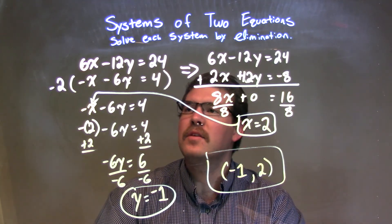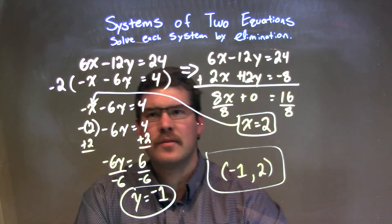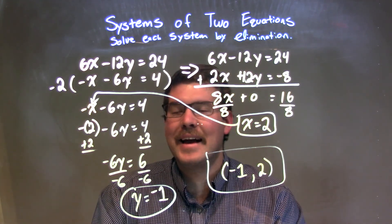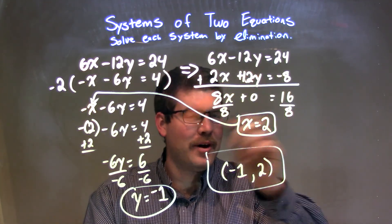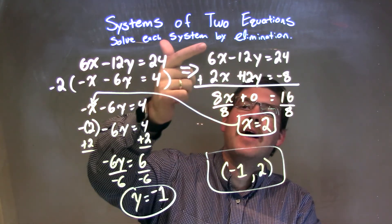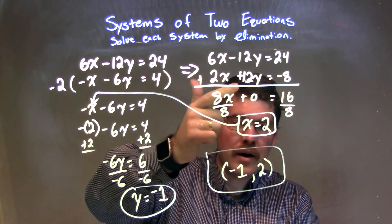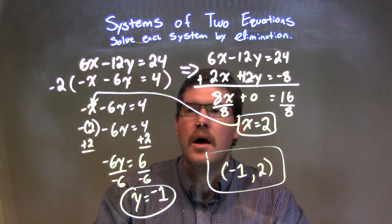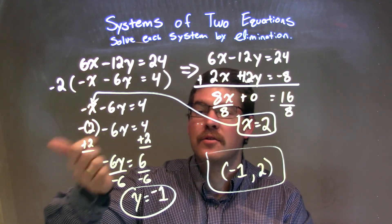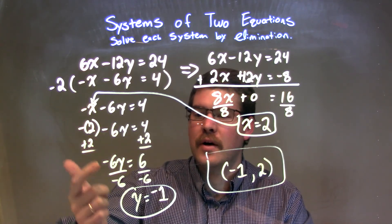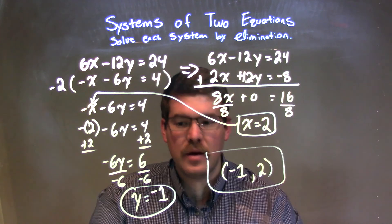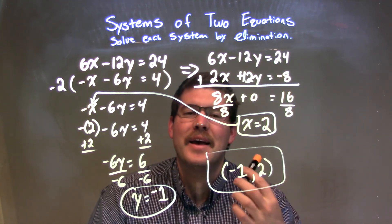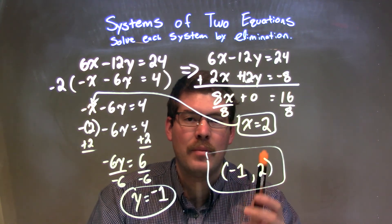Let's recap. We're given 6x minus 12y equals 24, and negative x minus 6y equals 4, and we have to solve this by elimination. By multiplying the second equation by negative 2, I come up with 2x plus positive 12y equals negative 8. I add that to the first equation to eliminate the y variable, leaving me with 8x equals 16. I divide by 8 on both sides, giving me x is 2. I plug that x equals 2 into the second equation to solve for y, and I got y to be negative 1. Now with y being negative 1 and x being positive 2, I can combine that to be a coordinate point with negative 1 being first. Our final answer is negative 1 comma positive 2.